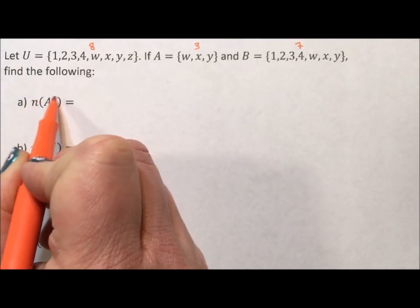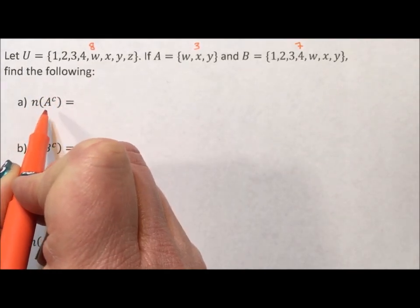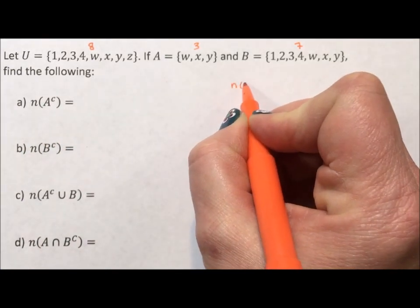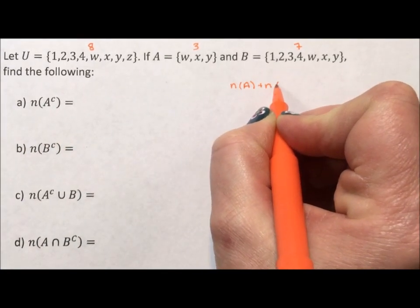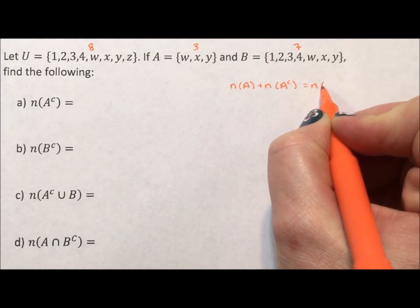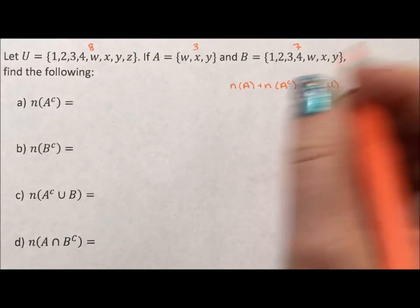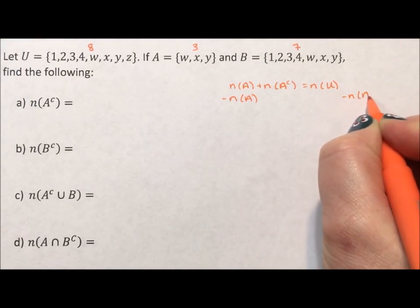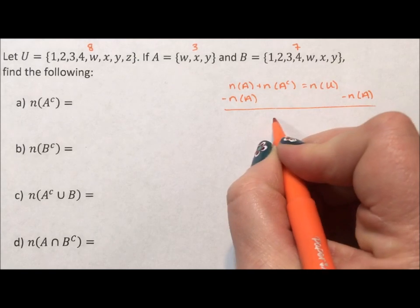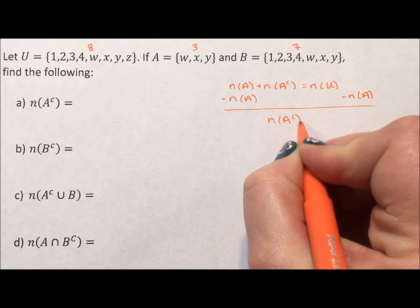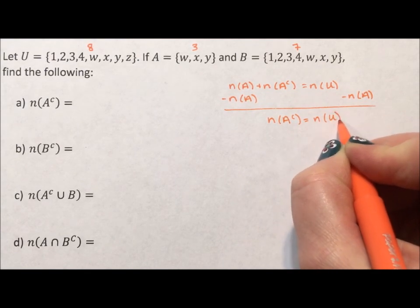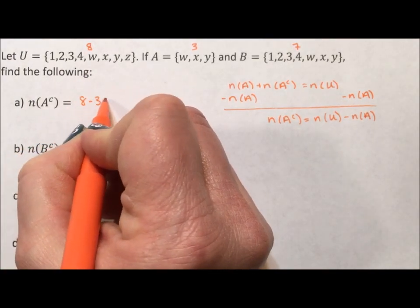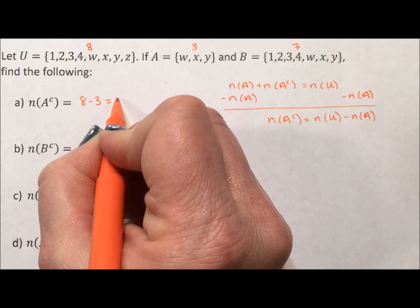The first thing that we're asked about is the complement. Now there are two ways of doing this. There is a rule that says the number of elements in A plus the number of elements in A's complement is equal to the number of elements in the universe. So if I subtract the number of elements of A over, I find out that the number of elements in A's complement is equal to the number of elements in the universe minus the number of elements in A. So I can come here and say 8 minus 3 is equal to 5.